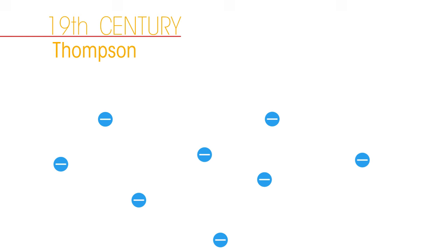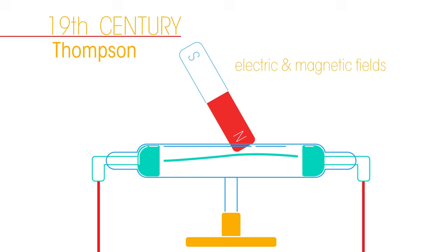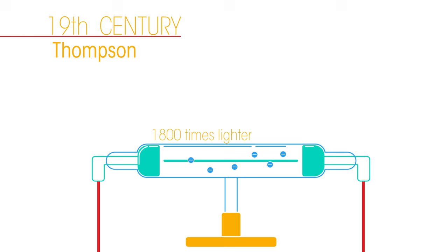In the late 19th century, a man called Thompson expanded on Dalton's idea. He discovered the existence of electrons when making cathode ray beams interact with electric and magnetic fields.